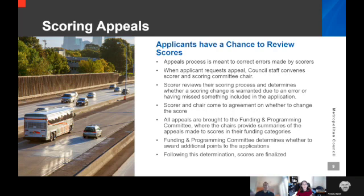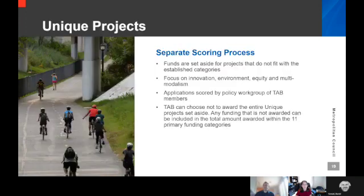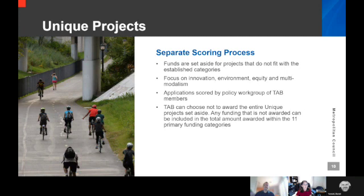Following that determination, a table like the one in the previous slide produces the final score, and we'll have 11 of those as we go through the process. Unique projects do not go through that process. This is something that has been part of the region's solicitation since at least the late 2000s. Historically, the purpose of unique projects is to fund projects that don't fit into the traditional categories. We have funded our travel behavior inventory survey that way. We funded diesel engine retrofits and some shared mobility services, and the focus is generally on innovation, multimodalism, and equity.